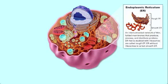Let's look at endoplasmic reticulum, ER. Rough ER and smooth ER, an interconnected network of thin folded membrane that produces, processes, and distributes protein. ER that is studded with ribosomes is called rough ER. ER without ribosomes is called smooth ER. Smooth ER is useful to digest drugs and alcohol, and it's used in the liver.